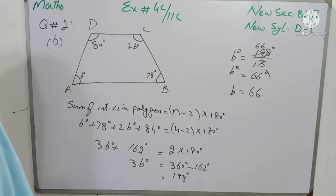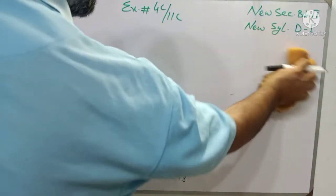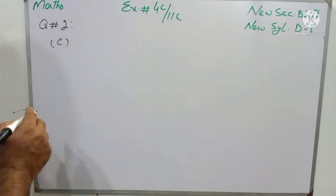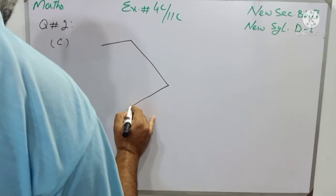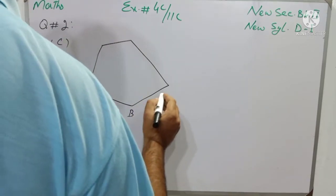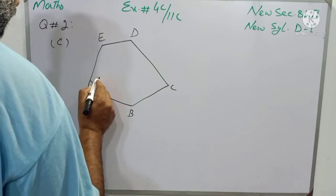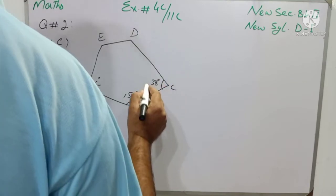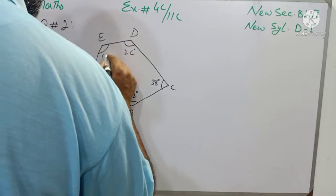Now I am going to solve Part C — a pentagon, which is a closed figure having 5 sides. The vertices are A, B, C, D, E. Angle A = c degrees, angle B = 152 degrees, angle C = 38 degrees, angle D = 2c degrees, and angle E = 101 degrees. We need to find the value of c.